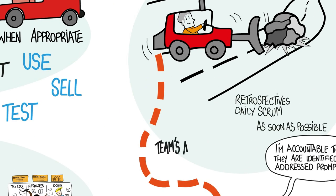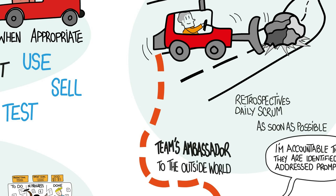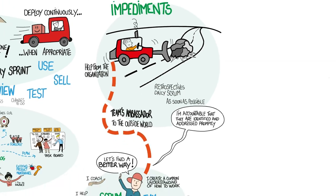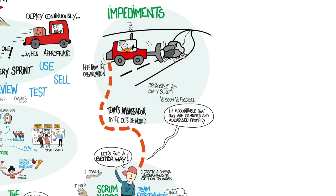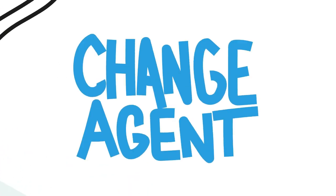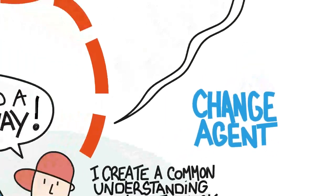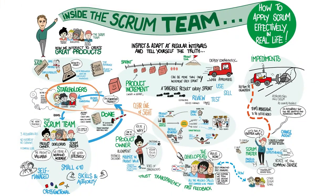I like to think of the Scrum Master as the team's ambassador to the outside world. When the developers need outside help, the Scrum Master is usually most able to focus on the issue. The Scrum Master is often called a change agent. Change is easiest when everyone wants to do it, so a good Scrum Master will ensure that everyone genuinely wants to improve, is willing to change for the better, and wants to do Scrum.